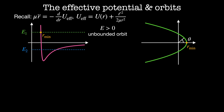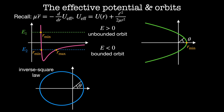Now imagine a system with total energy E2, which is less than zero. This corresponds to a bounded orbit, because there are two turning points — one at rmin and one at rmax — and the particle oscillates between them. For inverse square law potentials, bounded orbits are elliptical, with a single rmin and a single rmax, and the particle traces out this conic section forever. This is called a closed orbit.